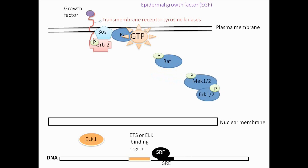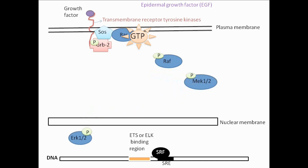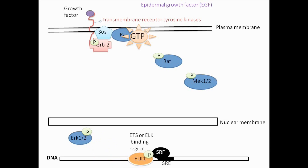Now activated ERK moves into the nucleus to phosphorylate ELK1. Phosphorylated ELK1 binds to the ETS1 binding region in the DNA, which is close to the serum response element. The SRF protein binds to that region, and ELK1 associates with SRF to activate transcription of the immediately early gene such as c-FOS.